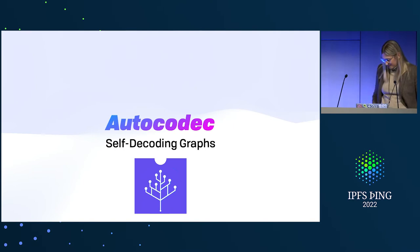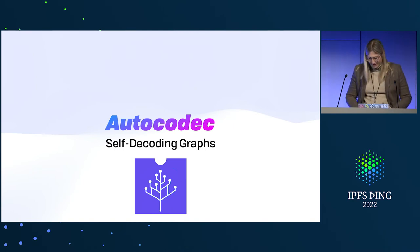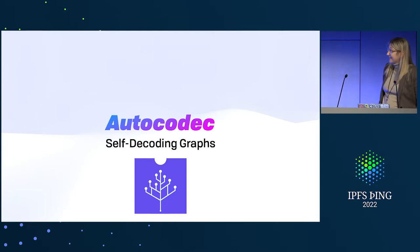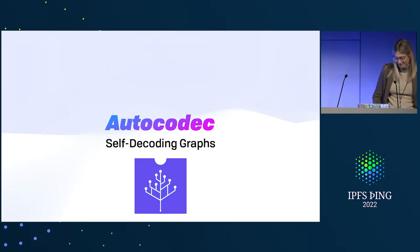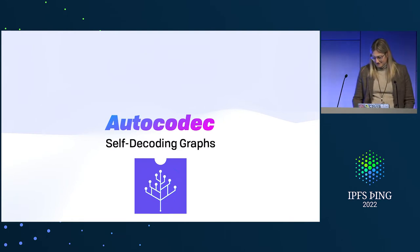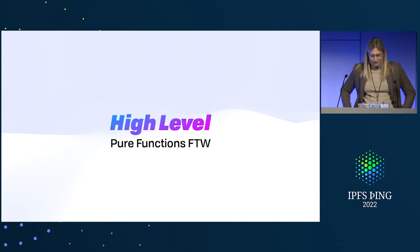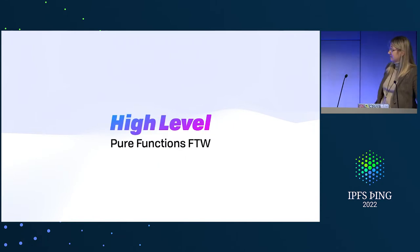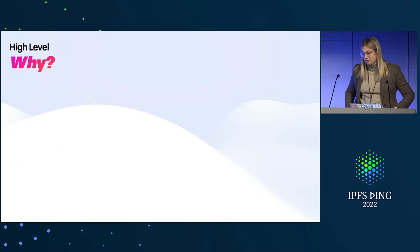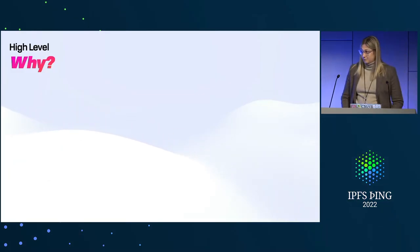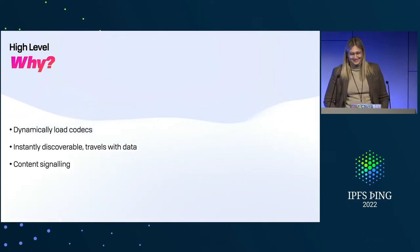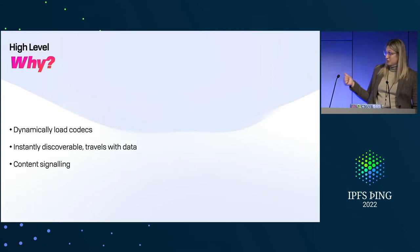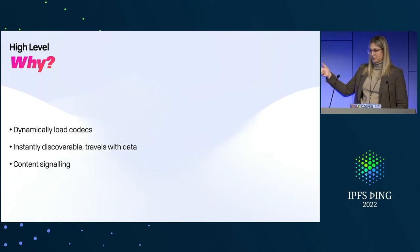Let's talk about autocodec, which is actually a good segue after IPVM. We're going to talk about shipping codecs in WASM into IPFS — self-decoding graphs, essentially. At a high level, if you can treat a WASM blob as a black box pure function, you get to dynamically load codecs, make them instantly discoverable, have them travel with the data, and use them to signal content.